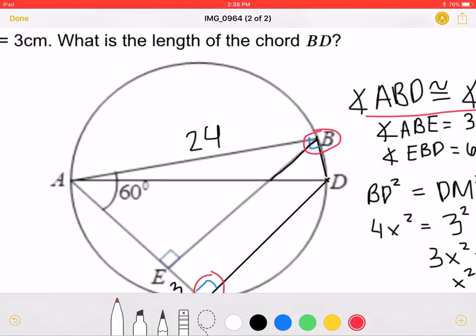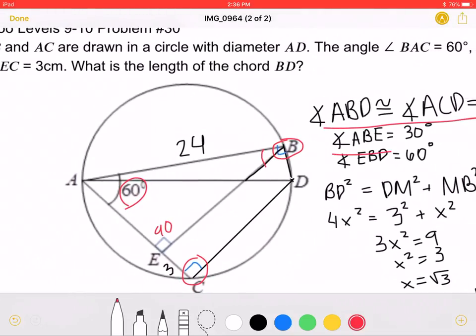Because this angle over here is equal to 60 and this one is equal to 90, angle ABE must be equal to 30 degrees. Because that is equal to 30 degrees, this angle over here, EBD, must be equal to 60 as they both add up to be 90 degrees.